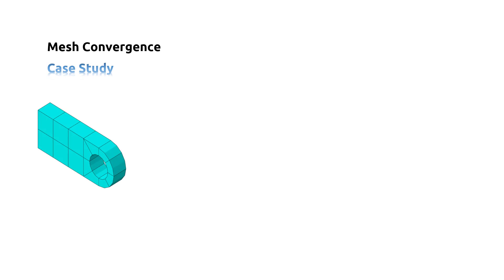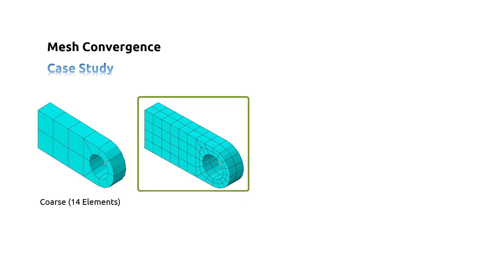As an example of a mesh convergence study, the connecting lug is analyzed using four different mesh densities. The first mesh density, which is named coarse, consists of 14 elements. The second mesh density, which is named normal, consists of 112 elements.